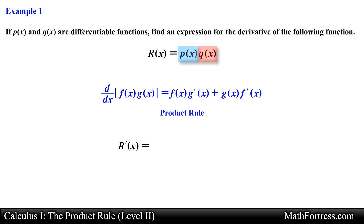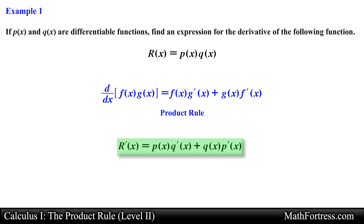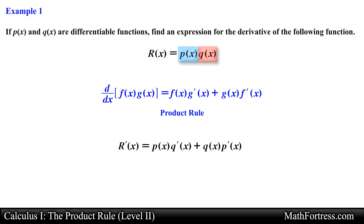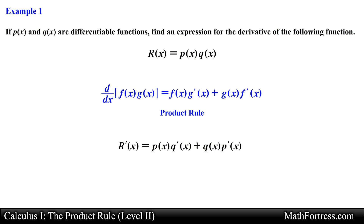With these assignments we go ahead and apply the product rule. The derivative of r is going to be equal to p times q' plus q times p'. This is the final derivative. All we are doing here is finding an expression for the derivative of r, which was defined by two distinct functions p and q. If we knew what p and q were equal to, we would just substitute them into our expression. In this case we just want a general expression for the derivative.